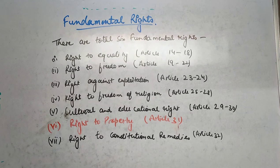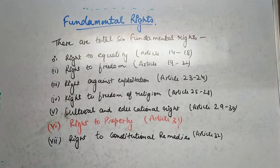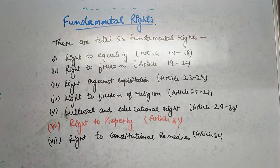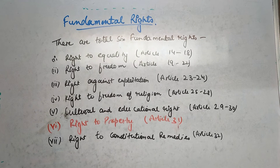Then Cultural and Educational Rights, Articles 29 to 30. You might notice there are actually seven rights listed here, because the sixth one was Right to Property, Article 31. However, by the 44th Constitutional Amendment Act 1978, it was deleted — so it is no longer a fundamental right. Therefore the sixth fundamental right is Right to Constitutional Remedies, Article 32. So basically there are six fundamental rights.